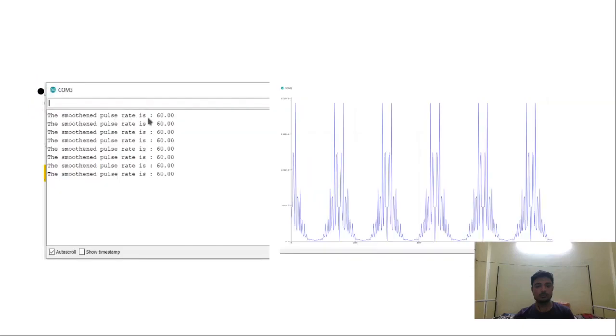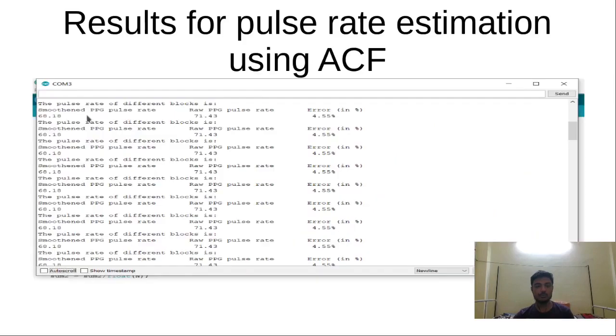With the DFT coefficients we are getting a pulse rate of 60, and with ACF function we are getting a pulse rate of 68. They are quite near to each other and they are well within the error range. So both provide considerably good results.